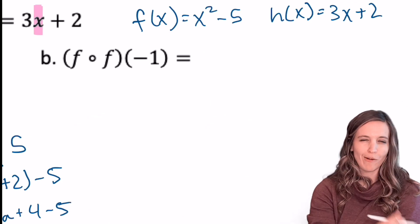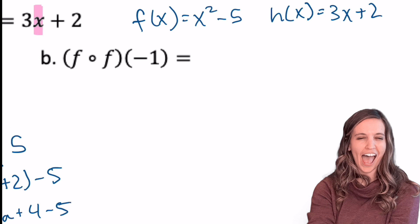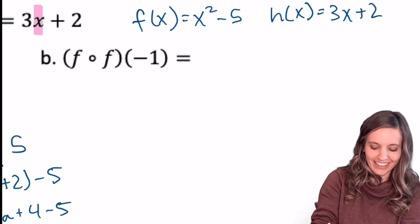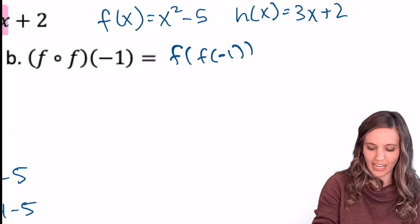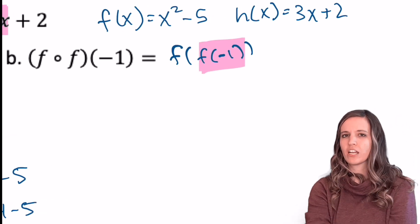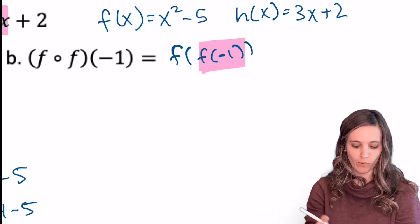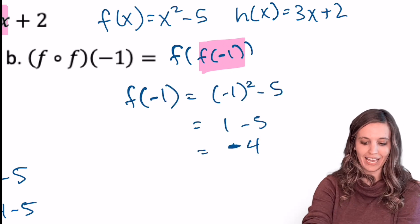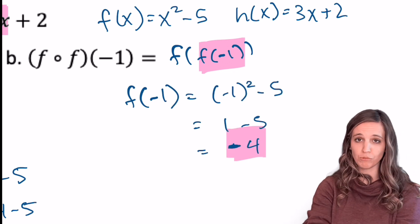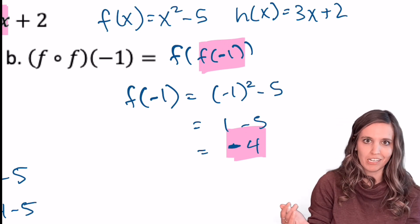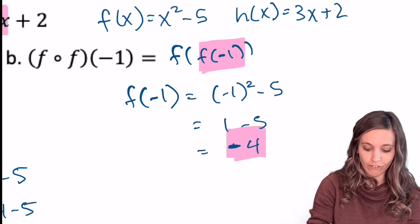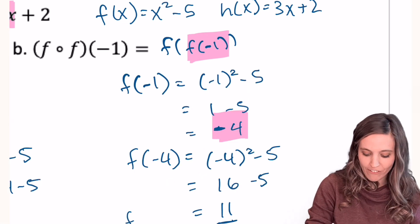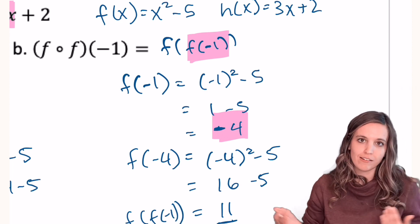For the last problem, f of f of negative 1: rewrite in preferred form to see that the input is f of negative 1. Evaluate the input first — f of negative 1 gives negative 4. Then input negative 4 into the outside function f: f of negative 4 gives 11. So f of f of negative 1 equals 11.